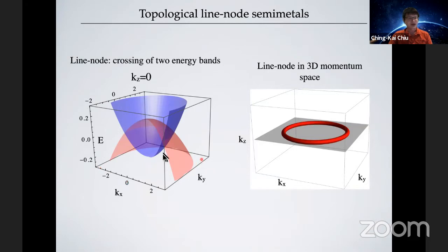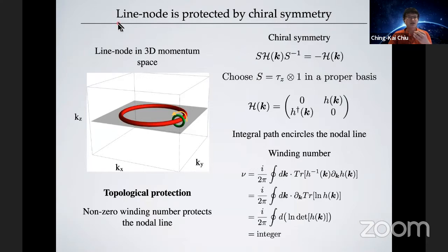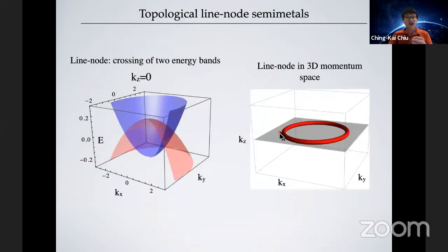In 2D momentum space with energy on the vertical axis, the blue and red energy bands have a crossing. This crossing forms a ring in the 3D Brillouin zone at k_z = 0 — a ring sitting in the k-plane. This is a one-dimensional object in three-dimensional momentum space, just like the knots we discussed in knot theory — except now it's in momentum space. This is called the nodal line: an energy crossing that forms a node-like ring.